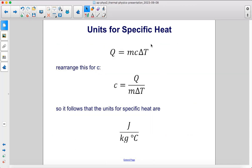If we rearrange this equation to solve for C, we would divide both sides by m ΔT. So it follows that the units for specific heat are joules over kilograms Celsius.